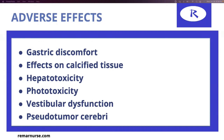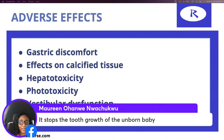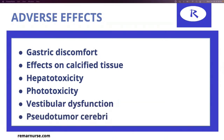Vestibular dysfunction — tetracyclines can also cause tinnitus, vertigo, and dizziness. This is a result of the medication building up in the endolymph. Also pseudotumor cerebri — a benign intracranial hypertension that can happen. If the patient starts complaining of a headache or blurry vision, tetracyclines can also cause this.